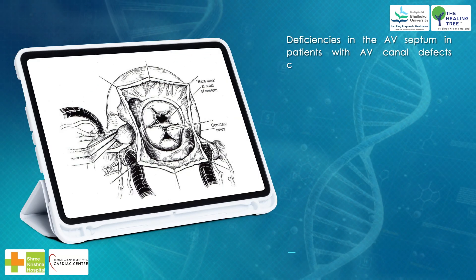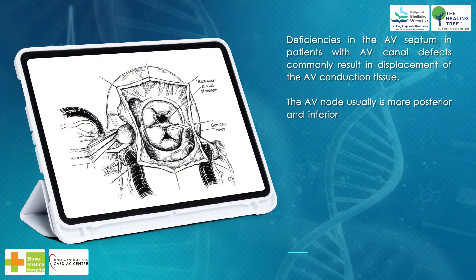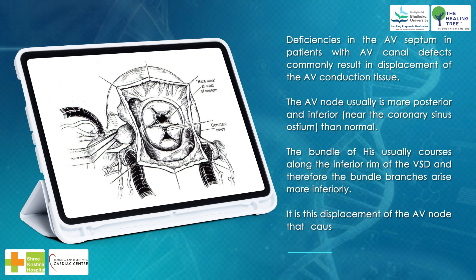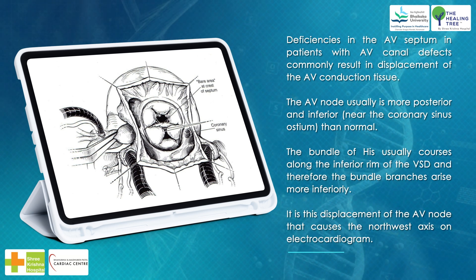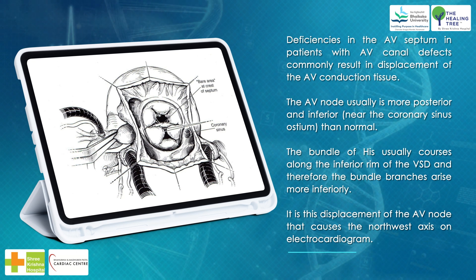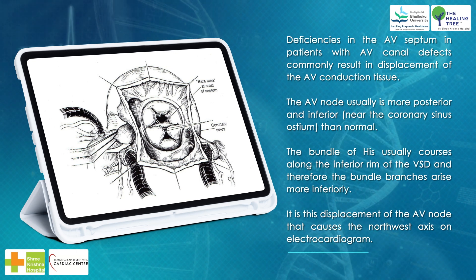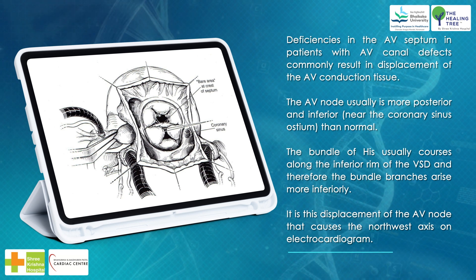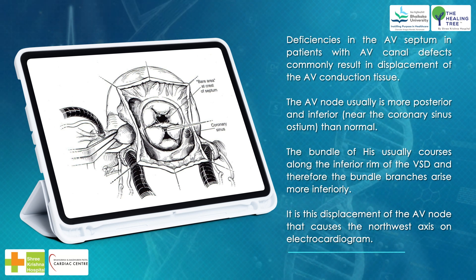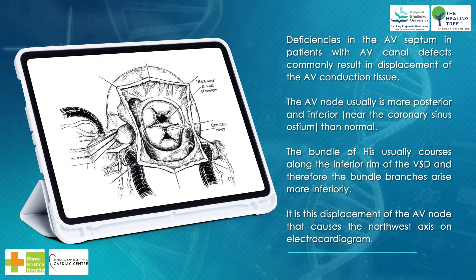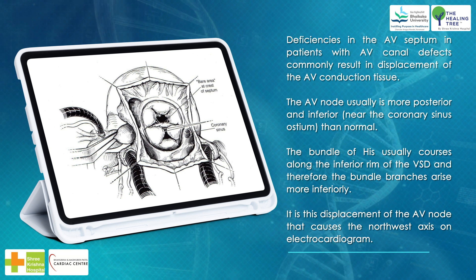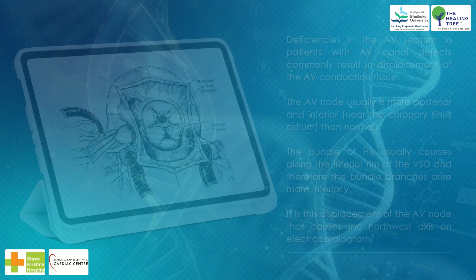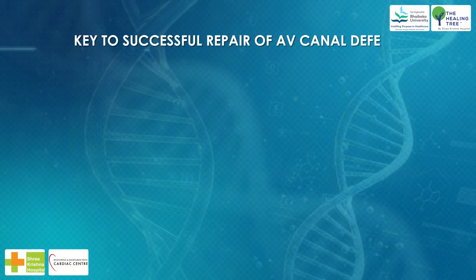Deficiencies in the AV septum in patients with AV canal defects commonly result in displacement of the AV conduction tissue. The AV node is usually more posterior and inferior, near the coronary sinus ostium, than normal. The bundle of His usually courses along the inferior rim of the VSD, and therefore the bundle branches arise more inferiorly. This displacement of the AV node causes the northwest axis on electrocardiogram.